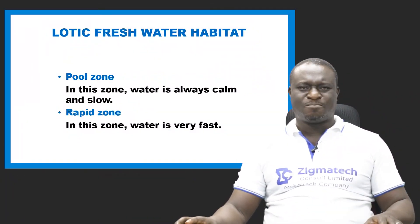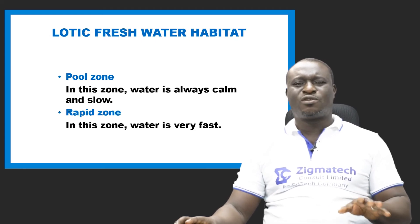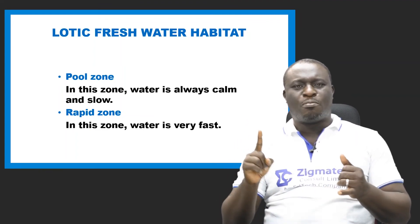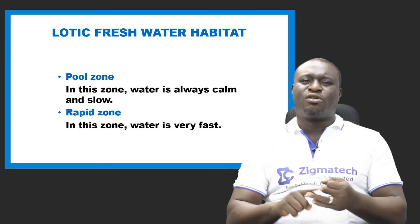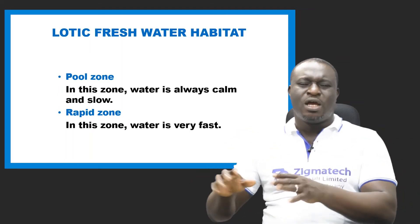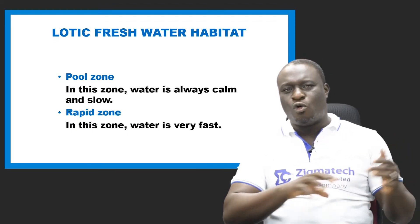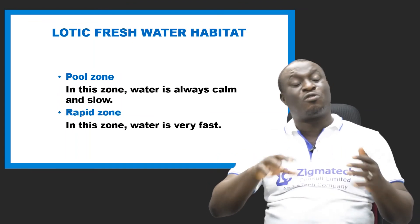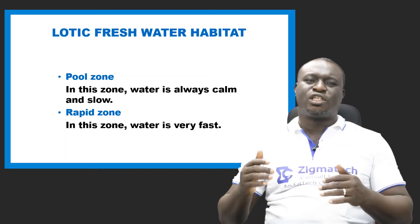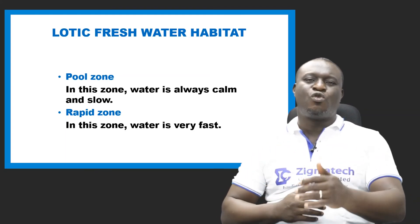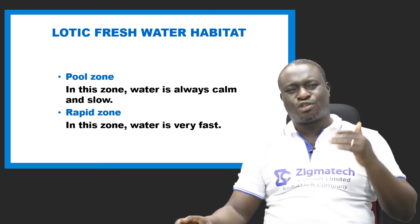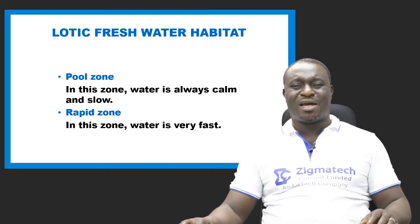In lotic freshwater habitat (running water), we have two zones. The pool zone is where water is calm and slow-moving with low current. The rapid zone is where water flow is very fast.